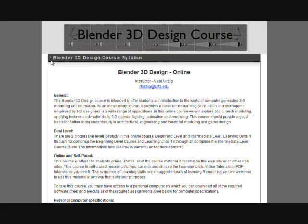This course should provide a good basis for further independent study in architectural, engineering, and theatrical modeling and game design. There are two progressive levels of study: beginning level and intermediate level. Learning units 1 through 12 comprise the beginning level course, and learning units 13 through 24 comprise the intermediate level course. Note: the intermediate level course is currently under development.